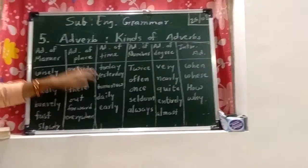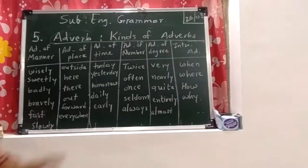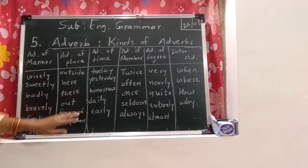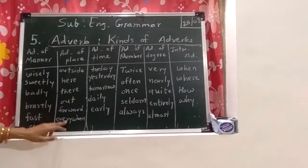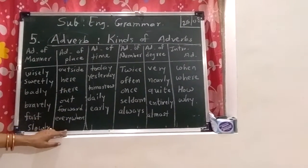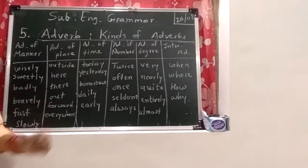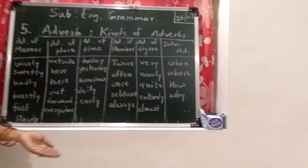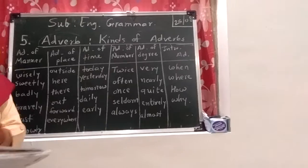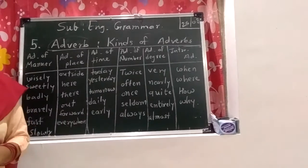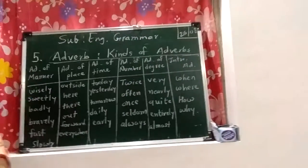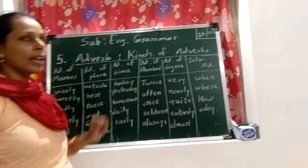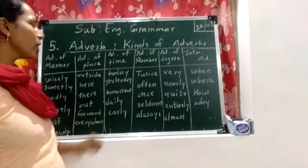The second kind is the adverb of place, which shows where the action is done. Examples: outside, here, there, out, forward, everywhere. For example: the boys are waiting outside. He lives here. We looked for her everywhere.